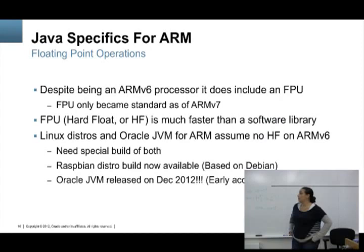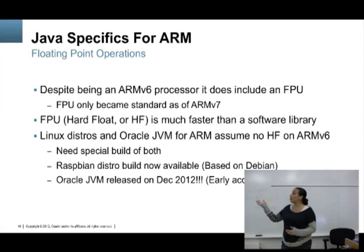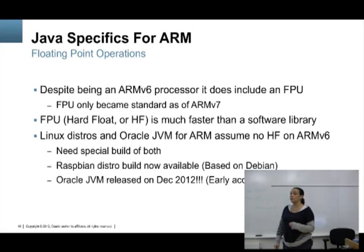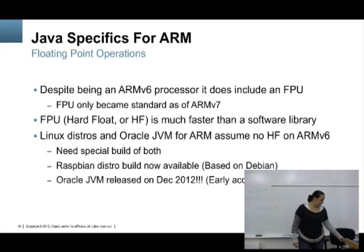Why did it take so long to have Java available for ARM? It wasn't an easy task — the testing was complicated. There are many processors out there, so we had to test for all of them. For ARM specifically, the floating point unit was not required for ARM version 6; it only became standard from version 7. So we had to have builds for both. As of December, we now have Java available for ARM with hard float. The Raspberry Pi does have a floating point unit, so this version is hard float.